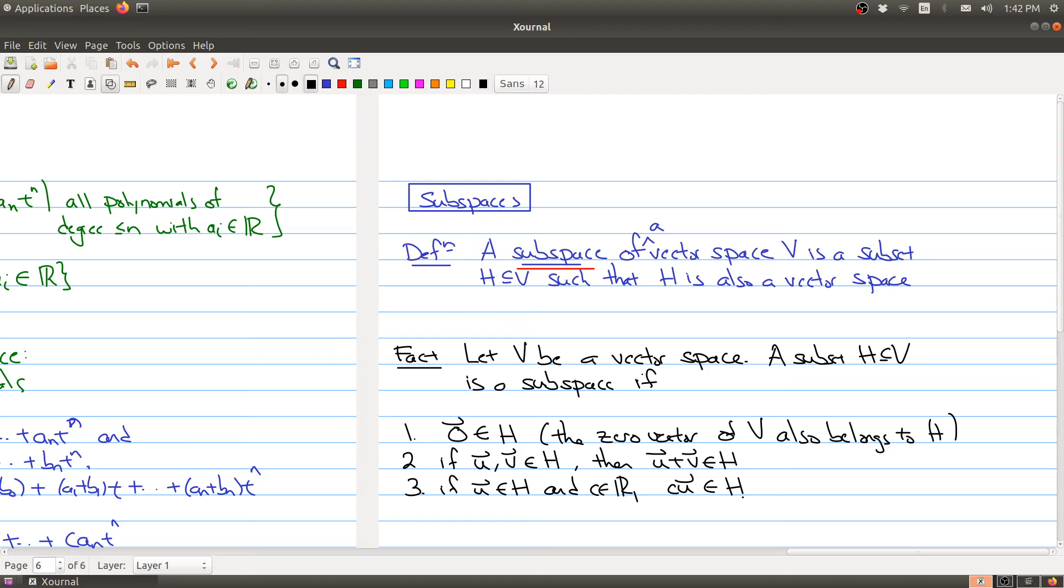So you don't have to check all ten axioms. You're basically checking the axiom whether zero belongs to H, and then you're checking axioms one and six. And you can look in the textbook to see why this is enough to check whether a subset is also a subspace.